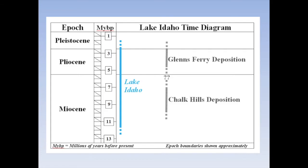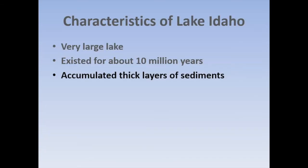Between the two units there are a series of question marks because toward the end of the Miocene it appears that Lake Idaho might have shrunk considerably or even gone away completely, so it's uncertain what went on during that time. The third characteristic of Lake Idaho is that because it was around for such a long time, it accumulated fairly thick layers of sediment — ranging up to hundreds or thousands of feet thick. Let's take a look at some of this sediment in the field, because this is what we're going to be seeing in our field visits.